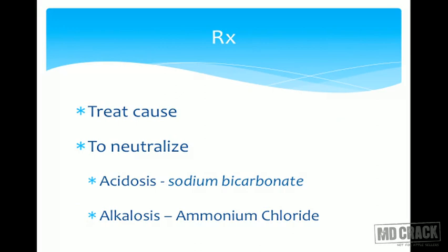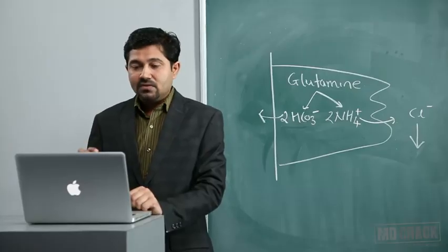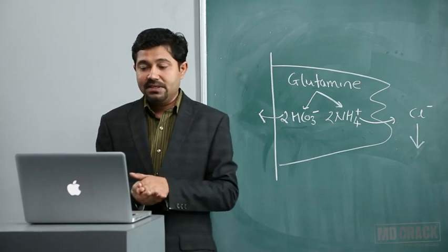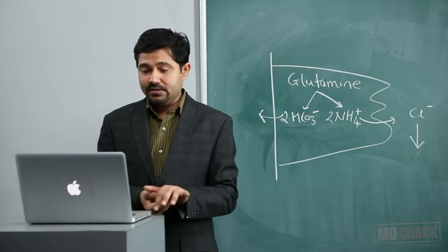For treatment, the most important step is to treat the underlying cause. Until the cause is treated, neutralizing drugs can be given: in acidosis, sodium bicarbonate can be used orally or intravenously; in alkalosis, ammonium chloride can be used orally and is well tolerated. With this, we come to the end of this lecture on acid-base regulation.